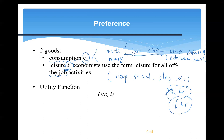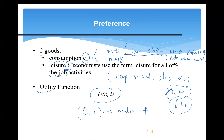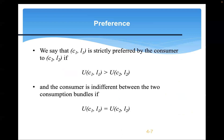Given these two goods, the consumer derives utility U from the combination of C and L. Utility is a mathematical function that maps any combination of C and L to a number. A higher number means higher utility. If bundle one generates a larger number than bundle two, then bundle one is strictly preferred. If two bundles generate the same level of utility, the consumer is indifferent between them.